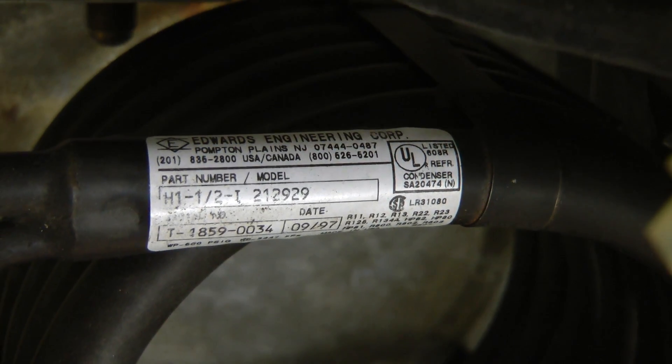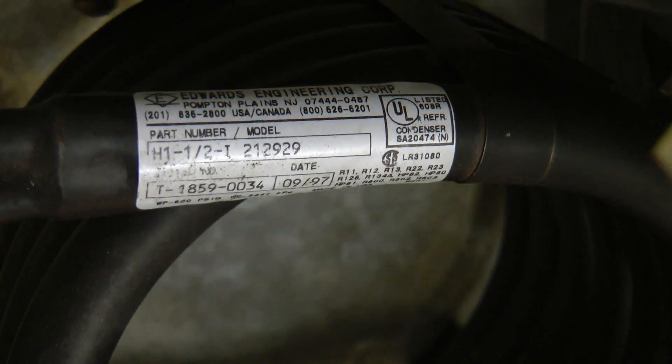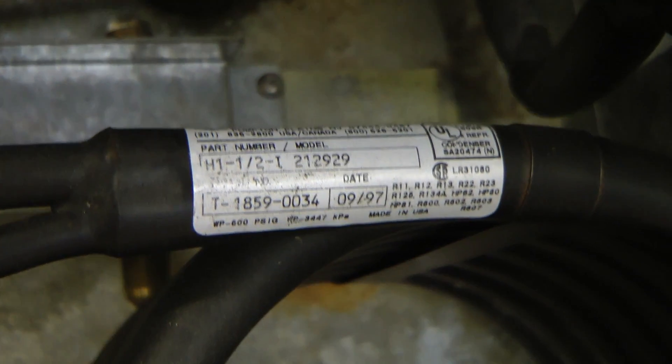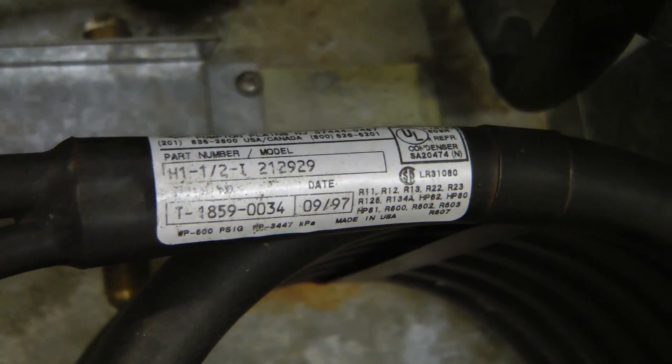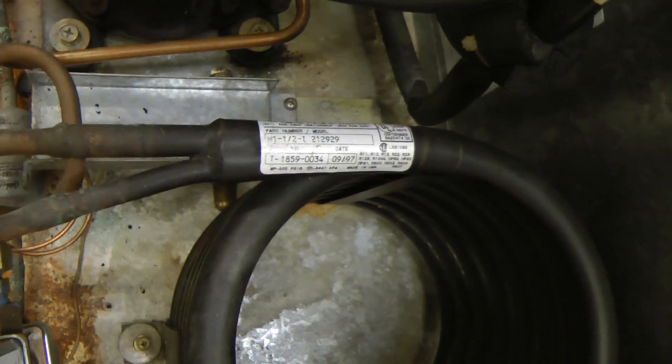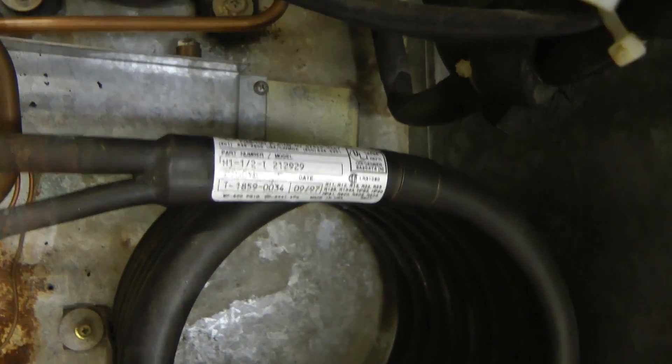The evaporator on this is marked Edwards Engineering Corp. It has a date of '97. I'm told this machine was installed around 24 years ago, so the early 90s. So either this has been replaced or that information is incorrect.